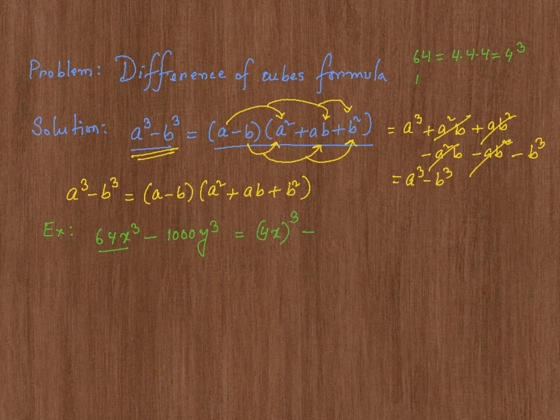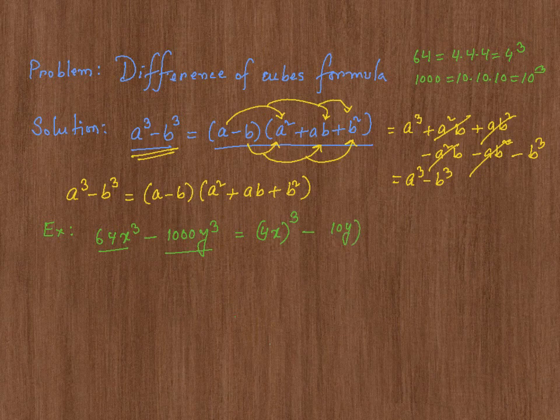Then minus, also 1,000 y cube is 10 times 10 times 10, which is 10 cube. So 1,000 y cube, I could rewrite it as 10y whole cube.